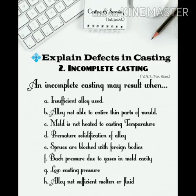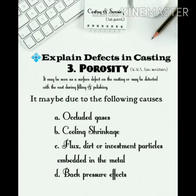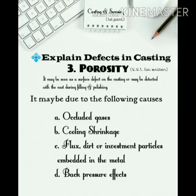H. Alloy not sufficiently molten or fluid. 3. Porosity — it may be seen as a surface defect on the casting or may be detected with the cast during filing and polishing. It may be due to the following causes: A. Occluded gases. B. Cooling shrinkage. C. Flux, dirt or investment particles embedded in the metal. D. Back pressure effects.